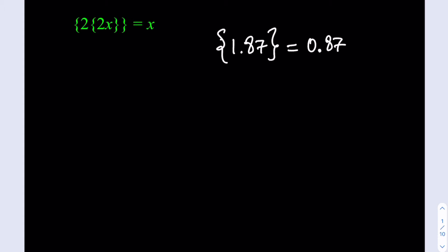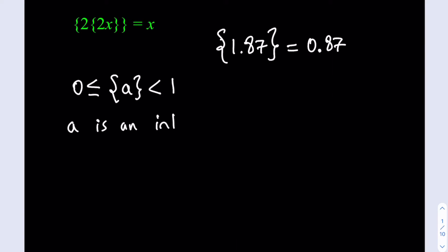We're going to be looking at different cases. First, we have to realize that the fractional part of any number is between 0 and 1, where 0 is included but 1 is not. The fractional part of a number equals 0 when that number is an integer — it has no fractional part.